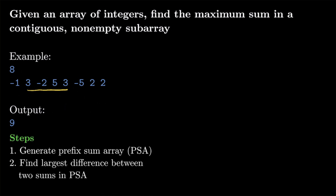We're going to follow two steps. The first step is to generate a prefix sum array (PSA), and the second step is to find the largest difference between two sums in that prefix sum array. We generate the prefix sum array because we need to find sums between two different ranges, and it takes a linear amount of steps to calculate each sum by hand. Pre-computing it lets us reference the lower and upper bound directly. I have a past video on prefix sums and range sum queries on my YouTube channel.